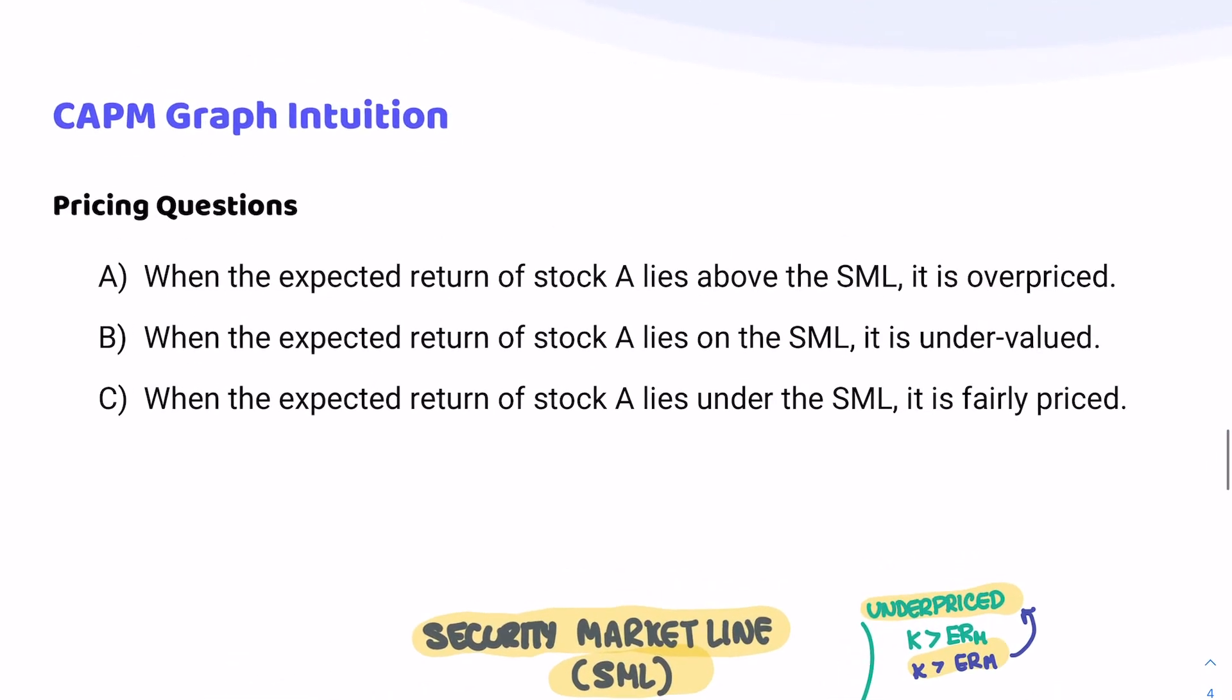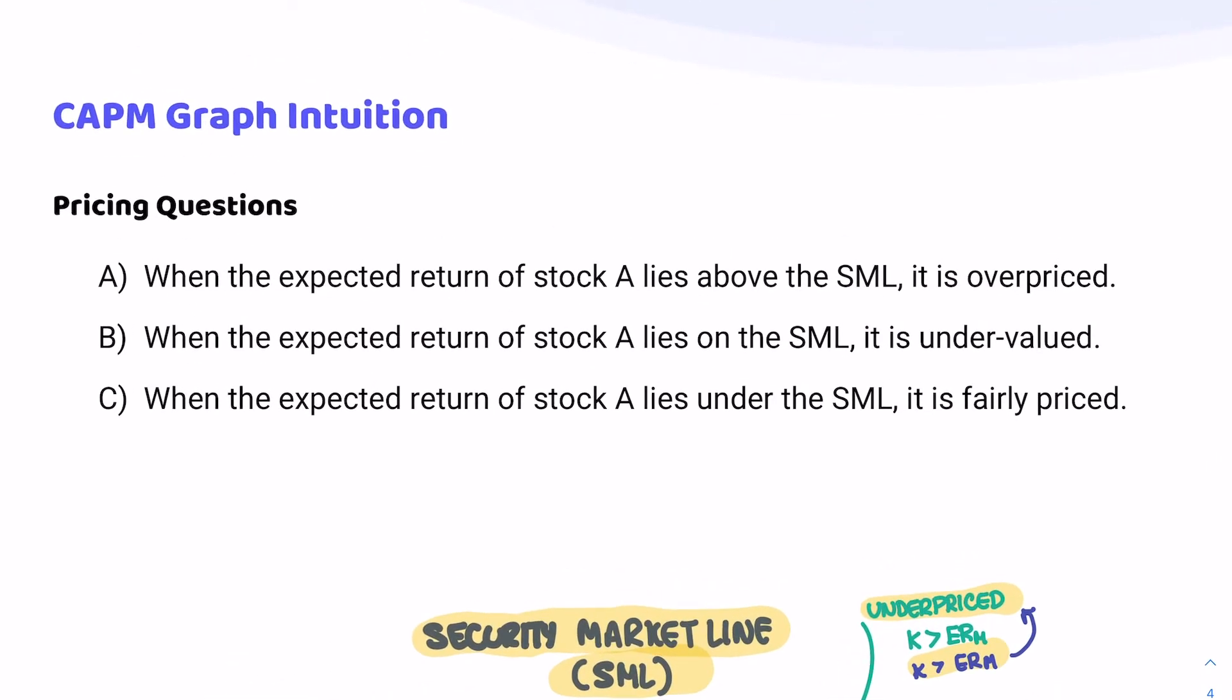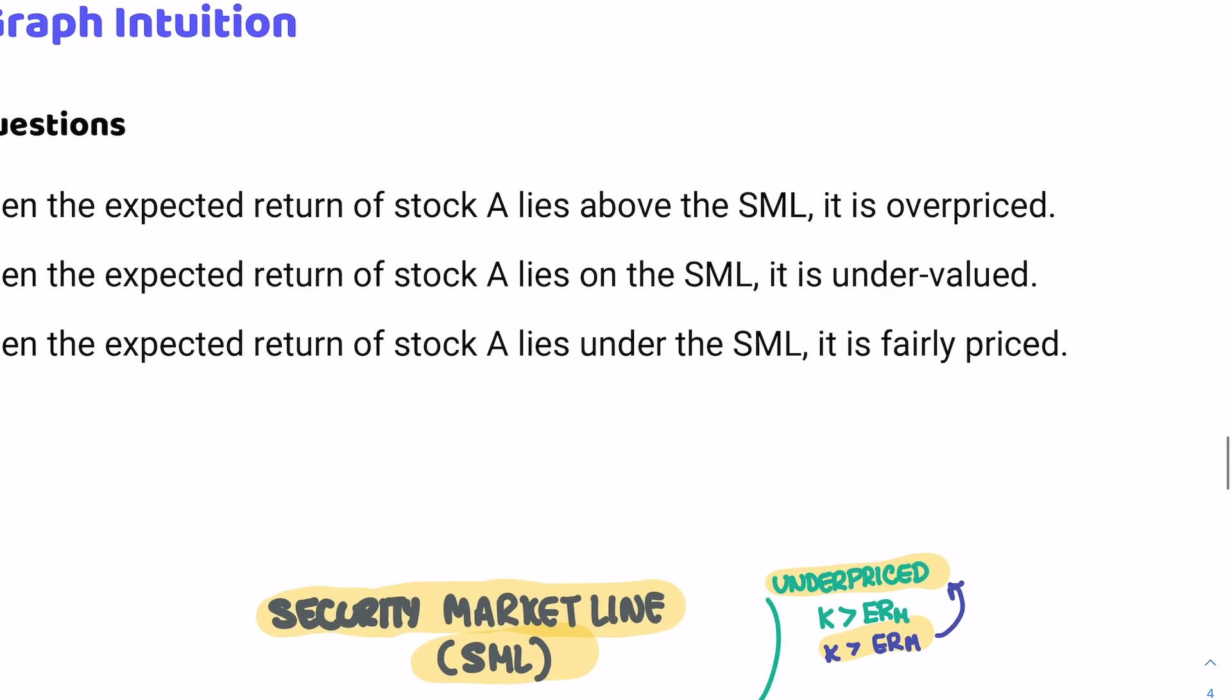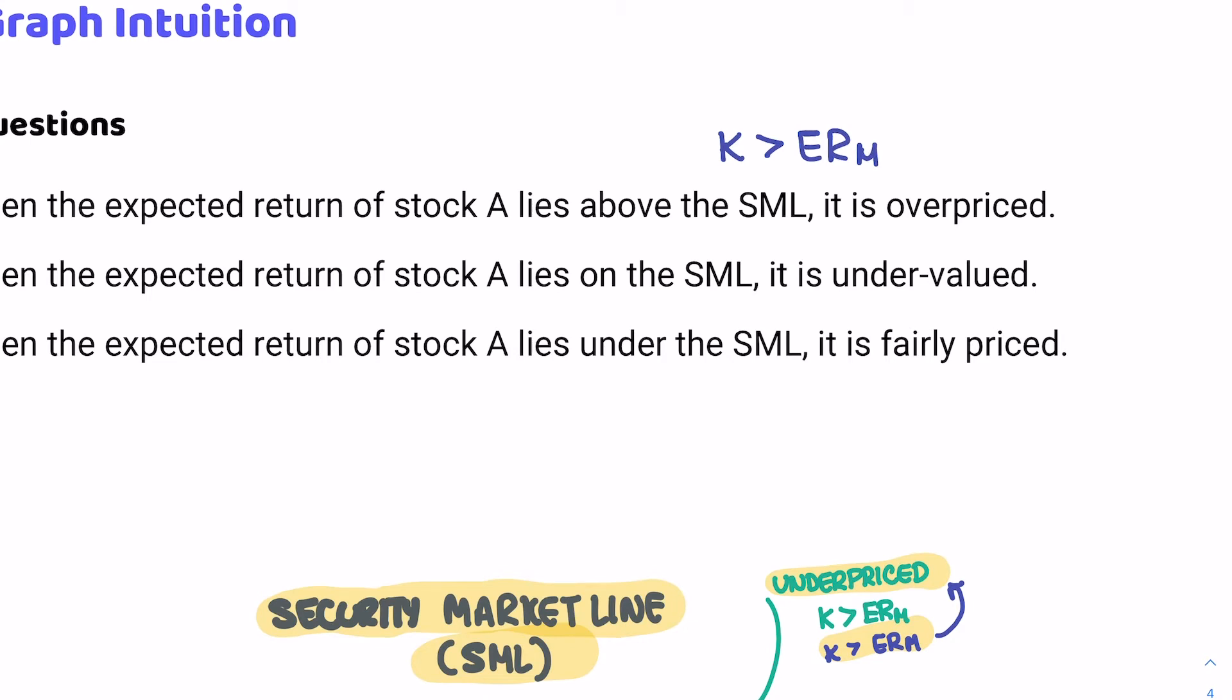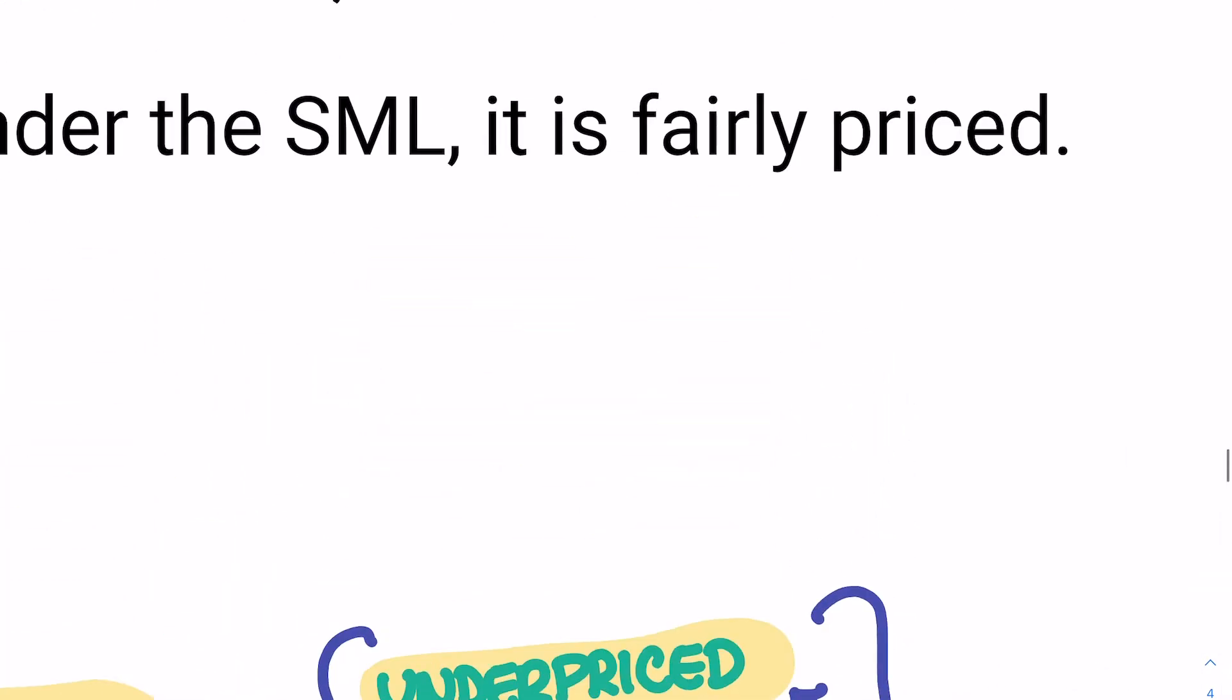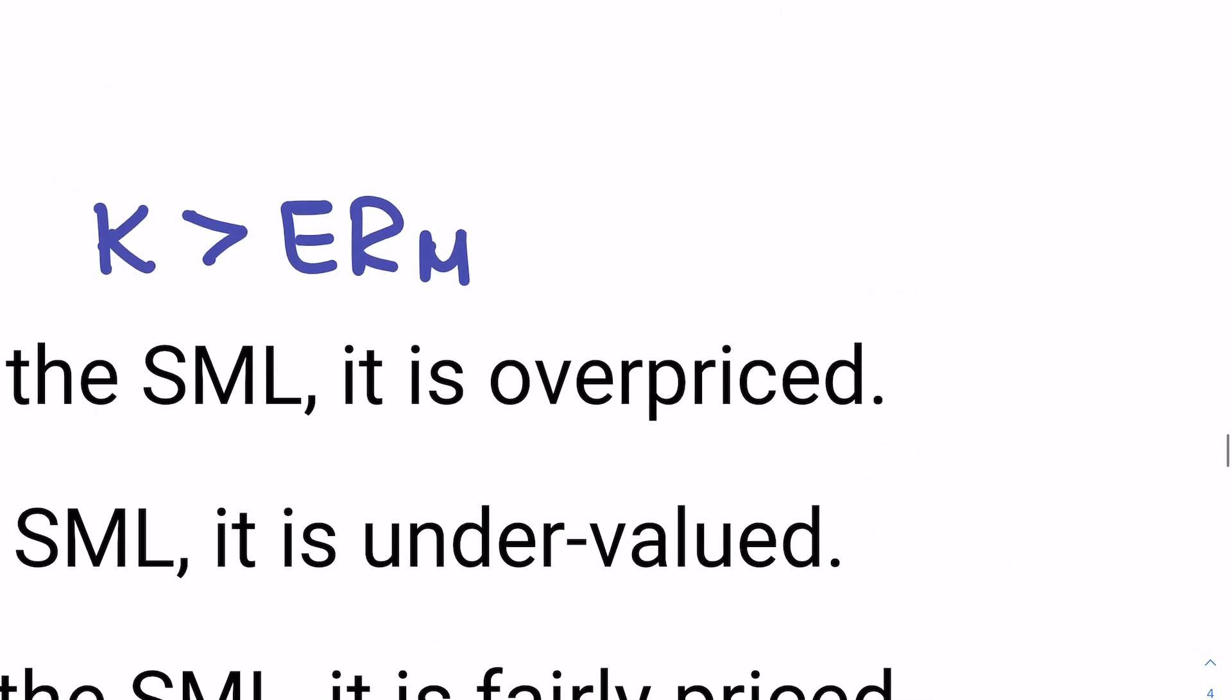Now if we go to our prompts, it becomes very obvious and easy for us to solve these questions. A says that when the expected return of stock A lies above the SML, that means K is above the SML at any given point. That would mean K is bigger than ERM. We know from our function that if K is bigger than ERM, it should be undervalued. Therefore, saying it's overpriced is not true. This has to be false.